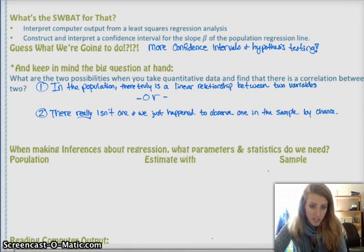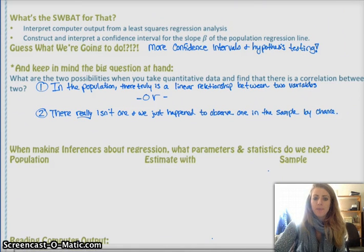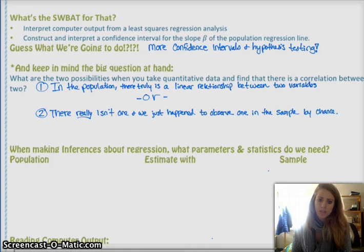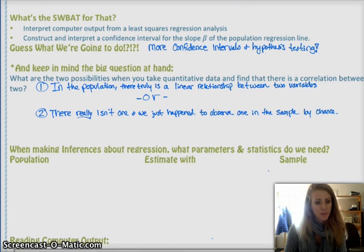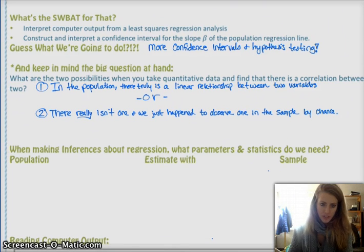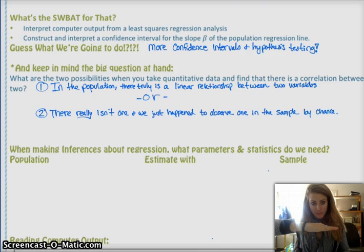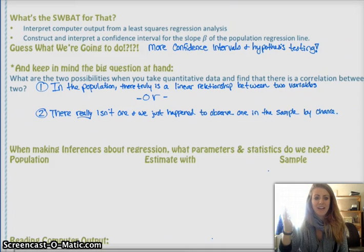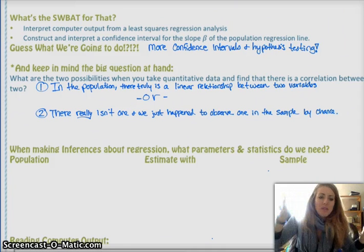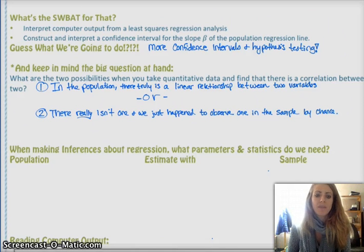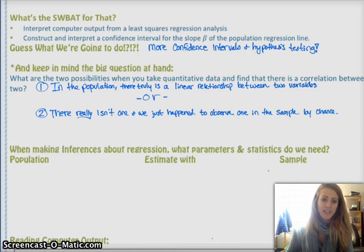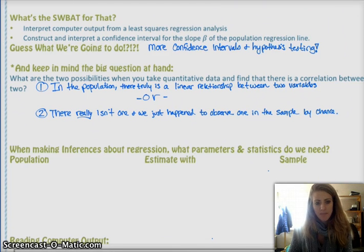So either there truly is, or there is not a relationship between the two variables. A correlation, linear correlation is what we're dealing with right now. Alright, talking notation strictly at this moment in time, I'm going to give you the population parameters that we're going to be using, and then the sample statistics that we will use in this chapter. So when you are looking at a least squares regression line, the true population will have a least squares regression line. And we call that mu sub y equals alpha plus beta times x.